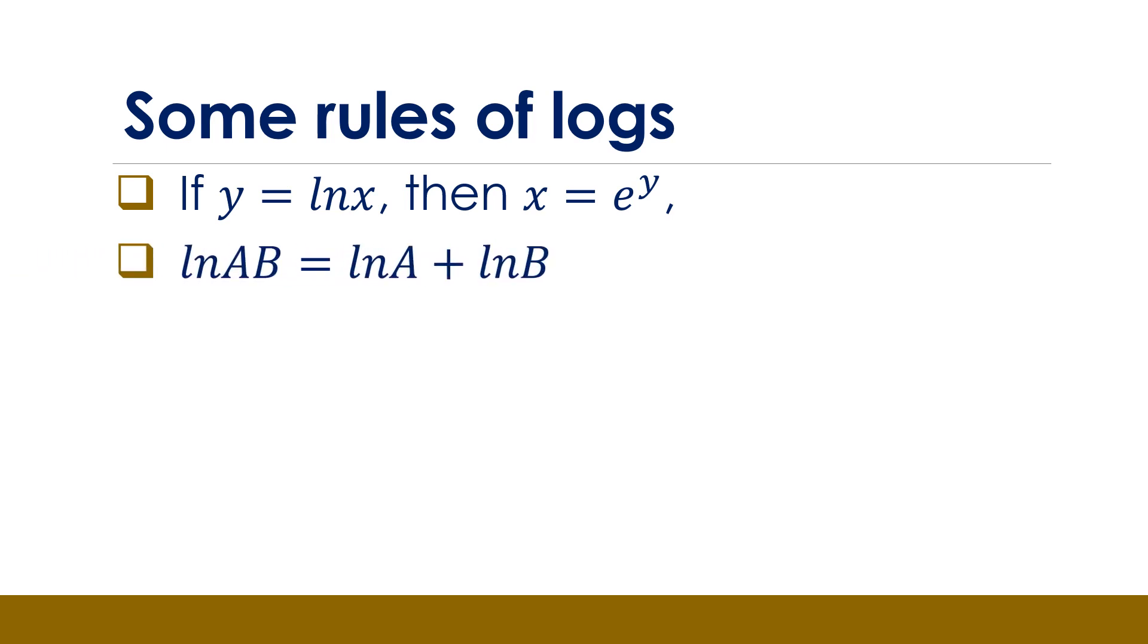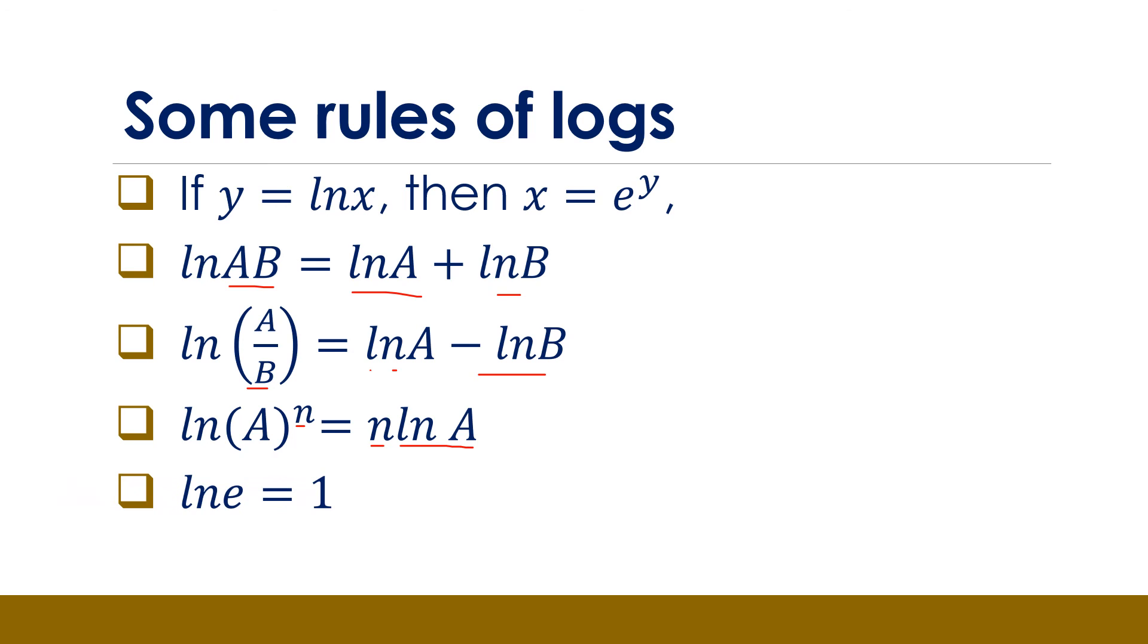And if we want to get the logarithm of a product, then the logarithm of a product AB is simply equal to the sum of the logarithms. The logarithm of a quotient is simply equal to the difference between the quotients. The logarithm of a number A raised to power n is simply equal to n times the logarithm of A. The natural logarithm of E, where E is equal to 2.71828, is equal to 1. And the logarithm of 1 to any base is equal to 0.